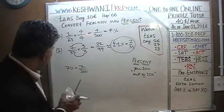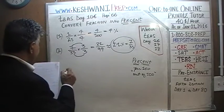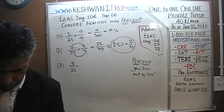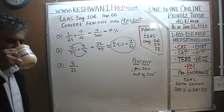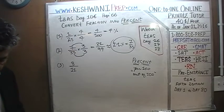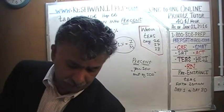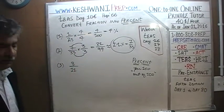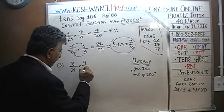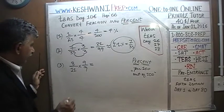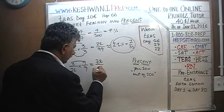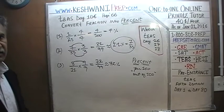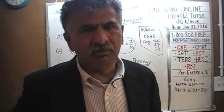Number three — pause the video and do it yourself. Eight-elevenths. We cannot divide one hundred by eleven evenly, so we're going to try to get as close to one hundred as possible. We can clearly see that eleven times nine gives us ninety-nine, just as before. So multiply top and bottom by nine. Eight times nine is seventy-two, giving us seventy-two over ninety-nine, which is approximately seventy-two percent — because seventy-two over one hundred would be exactly seventy-two percent, so seventy-two over ninety-nine is around seventy-two percent.